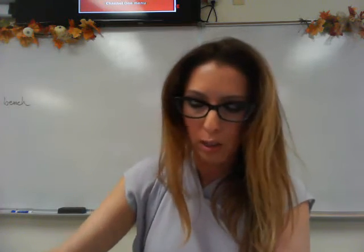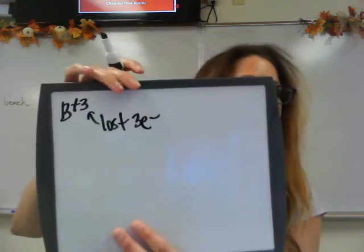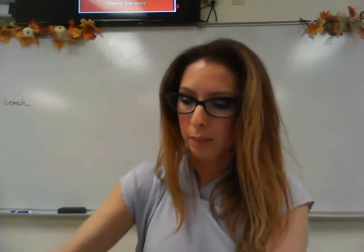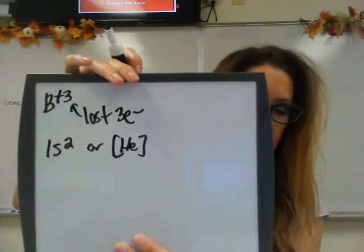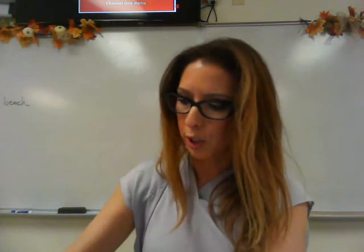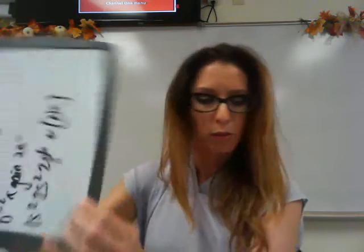Student exercise 12 is practice on electron configuration and noble gas shorthand. For B3+, the plus 3 means I lost 3 electrons, so go back 3 boxes — that puts you at helium. The electron configuration is 1s2, or helium in brackets. For O2-, gaining 2 electrons puts me at neon: 1s2, 2s2, 2p6, or neon in brackets.